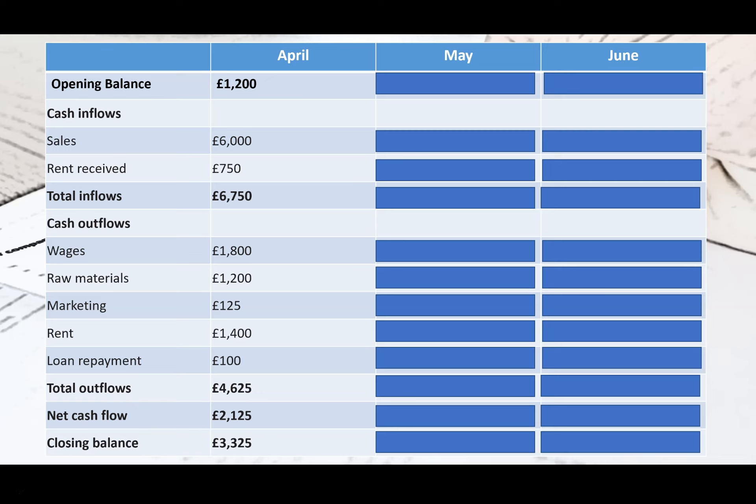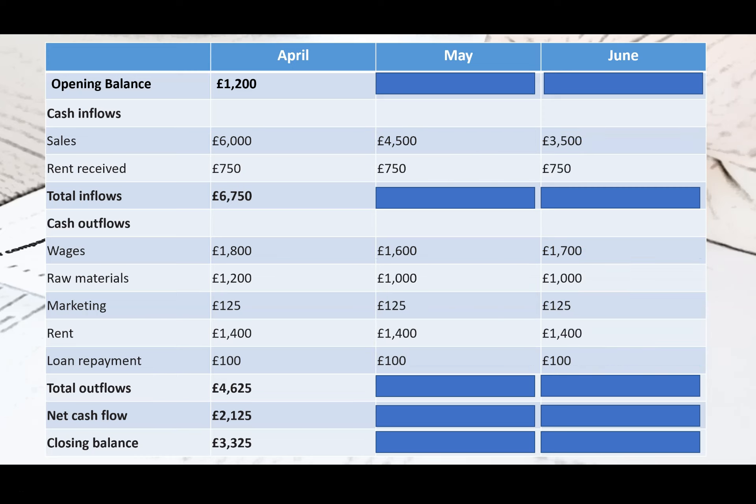Now that we've worked through April together, I've put all the inflows and outflows for May and June on your screen. What I'd like you to do is pause the video and try to calculate the opening balance, total inflows and outflows, net cash flow, and closing balance for May and June. Put an answer in every box with dark blue shading, and I'll show you the correct answers when you restart the video.